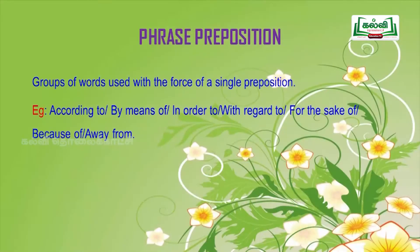The third one is phrase preposition. A phrase preposition is a group of words used with the force of a single preposition. Examples: according to, by means of, in order to, with regard to, for the sake of, because of, away from.